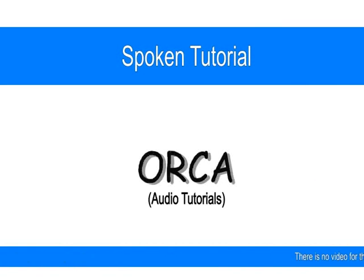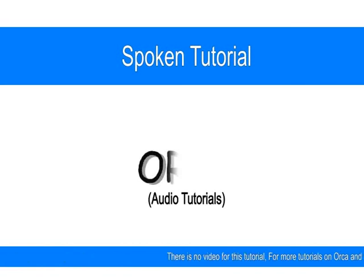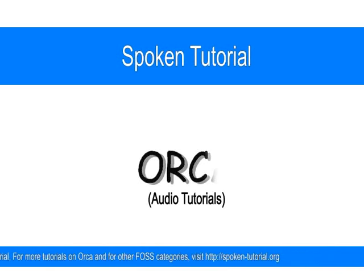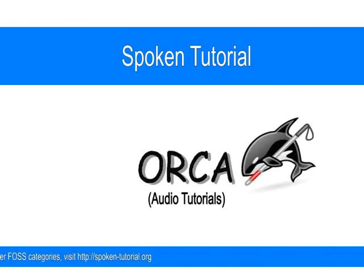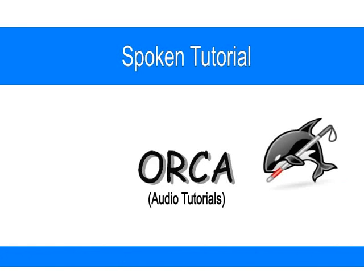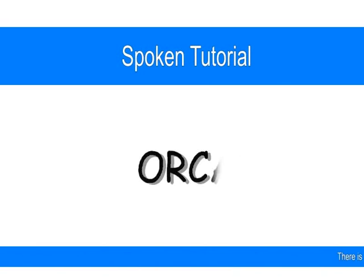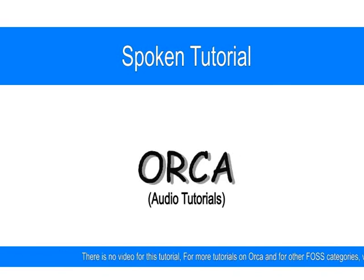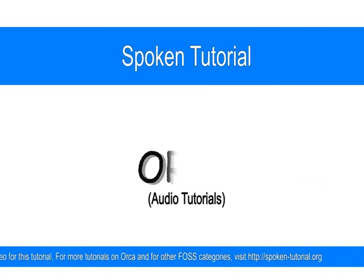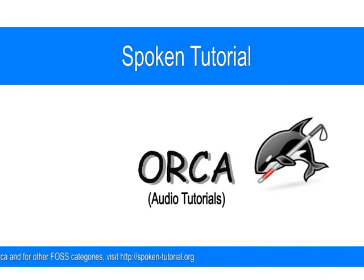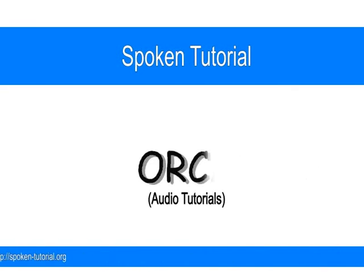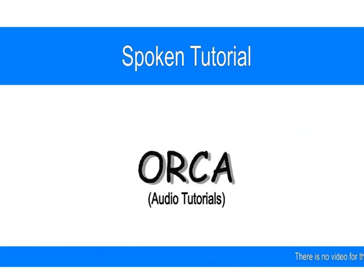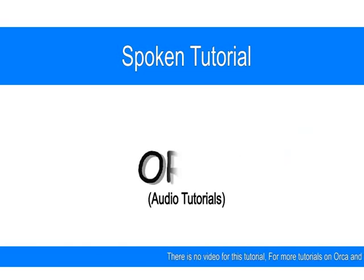Orca announces: Downloading the Vinux ISO file — link, heading level 3. As we can hear, Orca confirms there is a topic at heading level 3. You can at any point use the Read All command to read from the current selected heading. Now let's try pressing Shift plus 2 to move back to the start of the section. Orca announces: Action 1 — trying the Vinux CD/DVD — link, heading level 2. We are back at section 1.